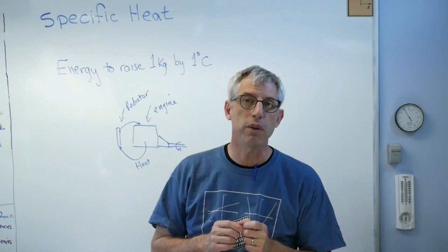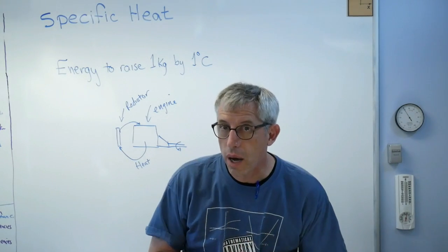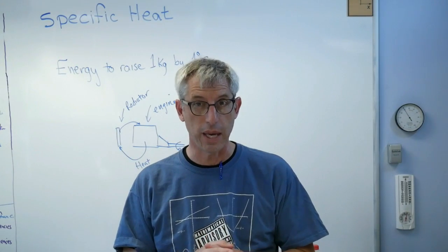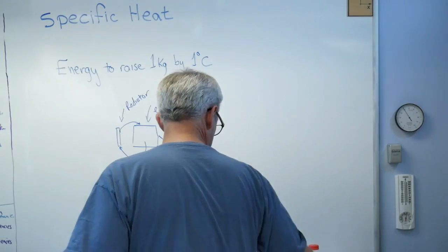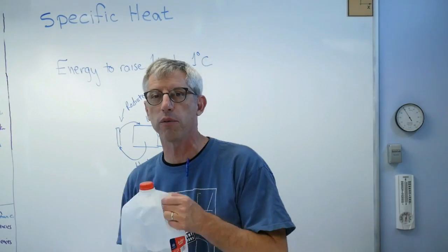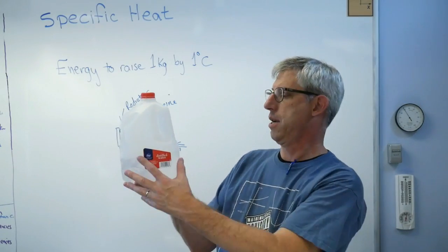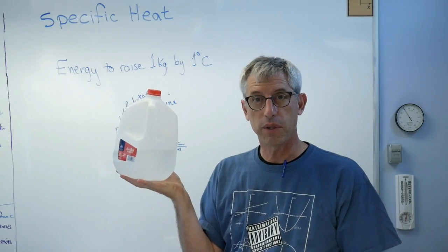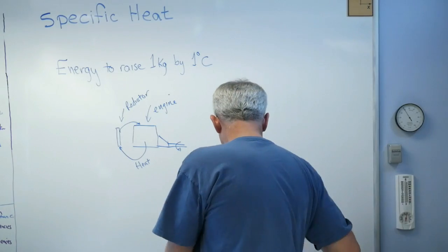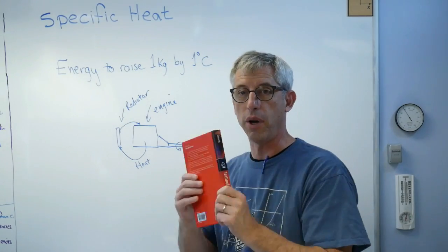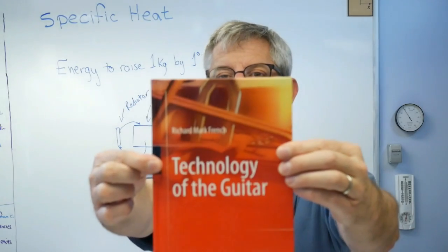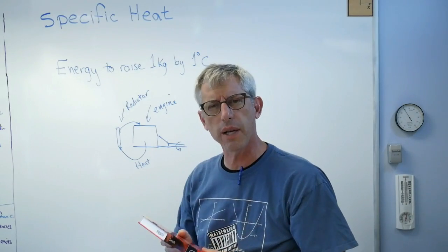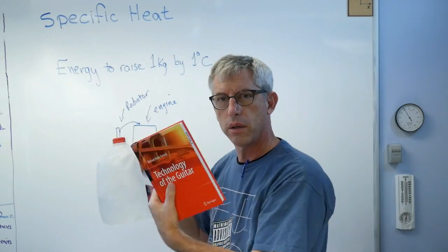There's one thing about specific heat you need to understand, and that's that the numbers are not intuitive. You cannot look at a material and guess its specific heat. So I've got a bottle of water here - this has a certain specific heat. I'll tell you in a minute what it is. This is a book - I wrote this book. This is a material, it has a specific heat. Well which one has the higher specific heat, the water or the book?